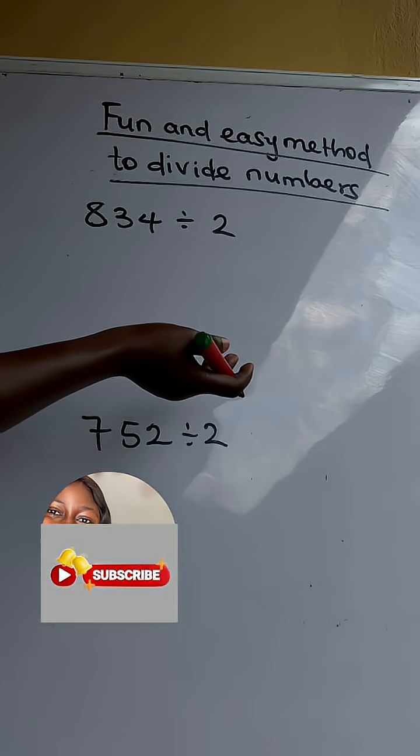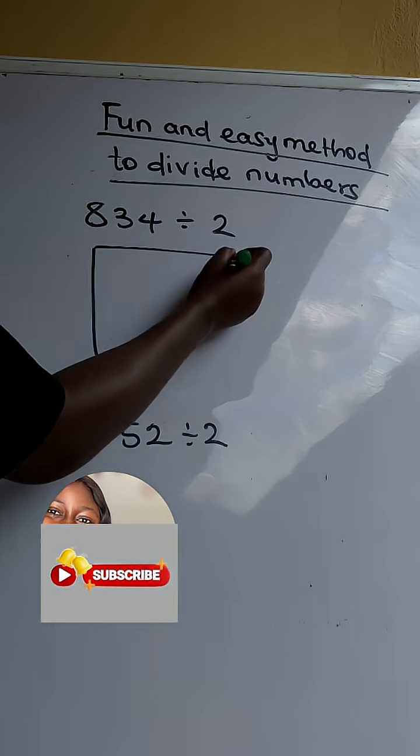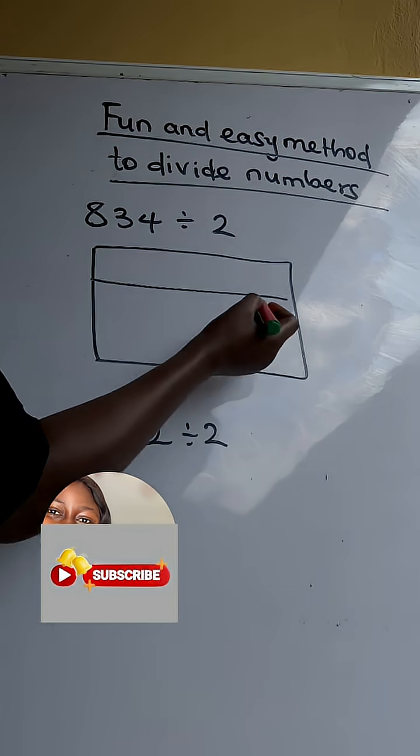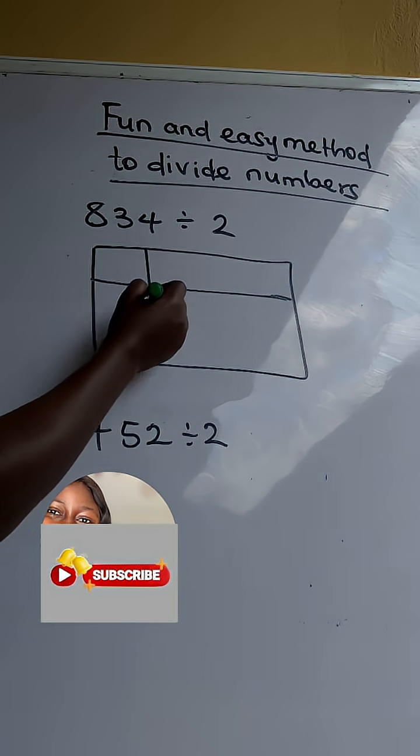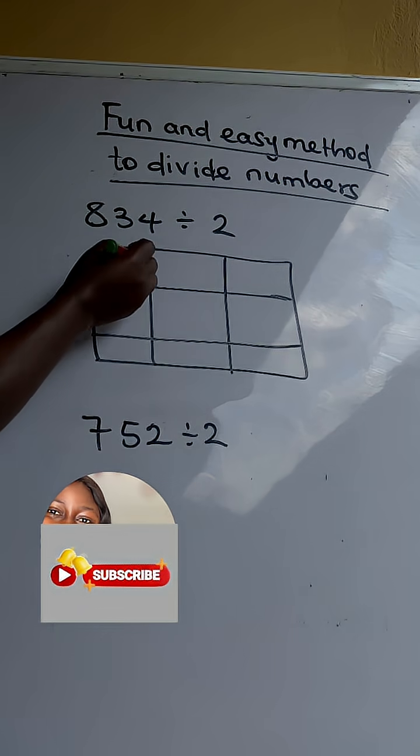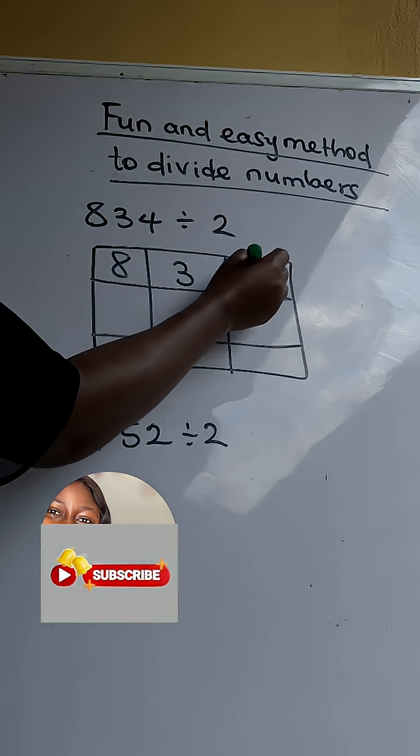Here is a fun way to divide this number. So we are going to draw our box and we are going to write our numbers like this. So this is 8, 3, and 4.